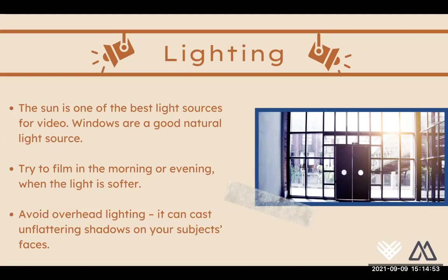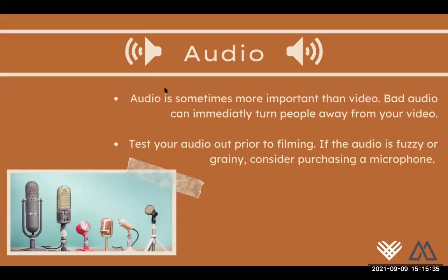One thing to also consider is to avoid overhead lighting — really harsh lighting that is directly above you. The reason you want to avoid overhead lighting is that it can actually cast really unflattering shadows on your subject's face if you're interviewing someone or filming yourself. Any shadows on you or behind you can be really distracting on film. Really try to position your lighting so that you aren't seeing a lot of shadows behind you or on you. That's why natural light is typically known as the best light.